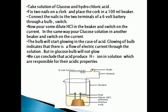Take solution of glucose and hydrochloric acid. You have to fix two nails on a cork and place the cork in a 100 ml beaker. Connect the nails to the two terminals of a 6-volt battery through a bulb and switch. Now pour some dilute hydrochloric acid in the beaker and switch on the current. The bulb will start glowing. The glowing of the bulb indicates that there is flow of electric current through the solution.